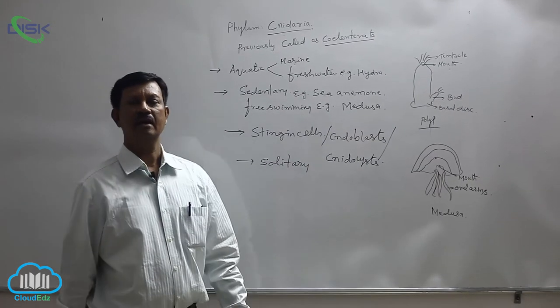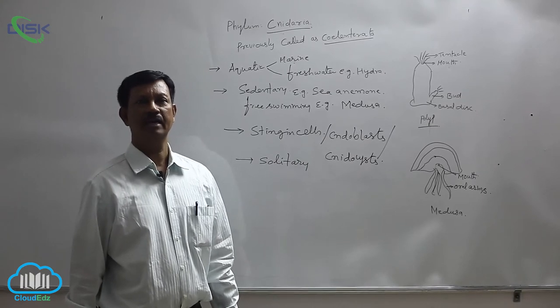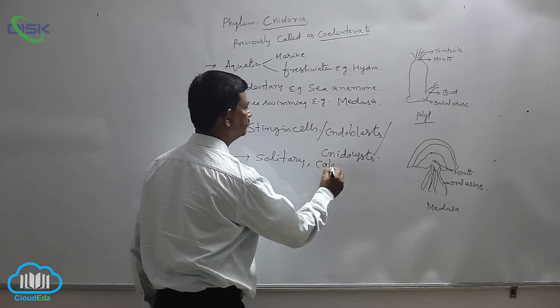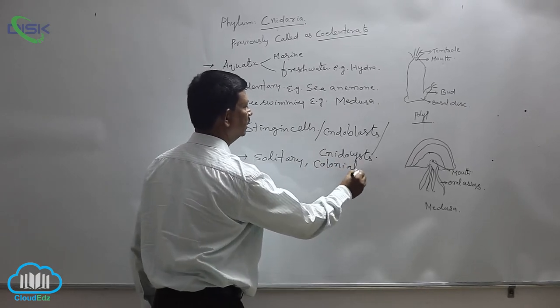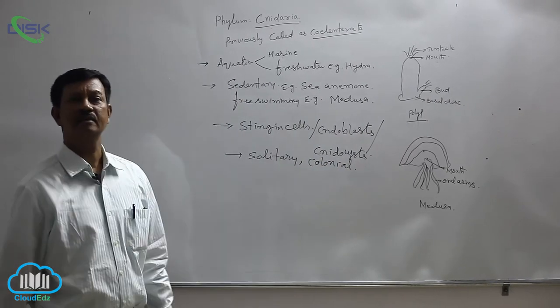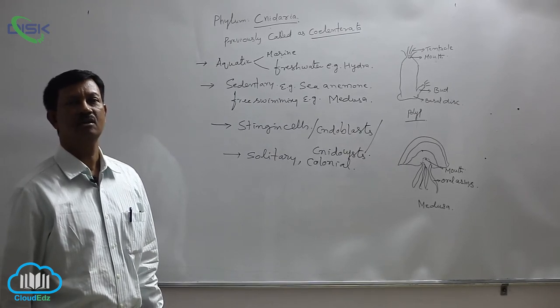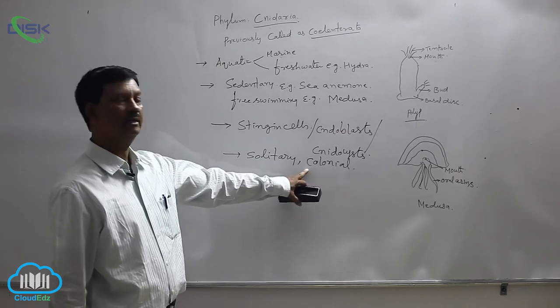Solitary means they are Hydra-like animals, found alone. Some are colonial forms. Corals come under colonial forms. Large numbers of animals are found together, that is why they are known as colonial forms.